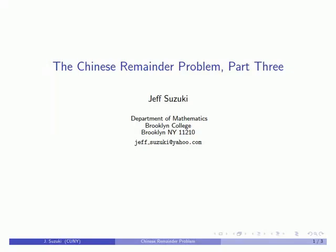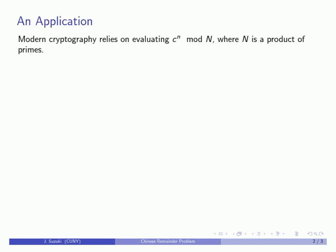One of the reasons the Chinese Remainder Theorem is important is that it allows us to take a congruence where our modulus is a product and reduce it to a system of linear congruences. This is particularly important in modern cryptography where we have to evaluate c to the power n mod N, where N is some product of primes. In general this is a tedious task.